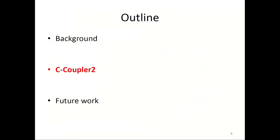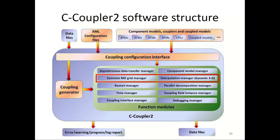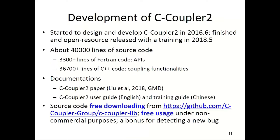Next I will introduce C-Couplers 2. When developing C-Couplers 2, motivated by the limitations of C-Couplers 1, we improved the software structure. We merged the coupling configuration interface, the coupling generator, and the functional modules together into the same library. We started design and development in 2016 and finished C-Couplers 2 in 2018. It includes about 40,000 lines of source code with Fortran APIs and C++ coupling functionalities.